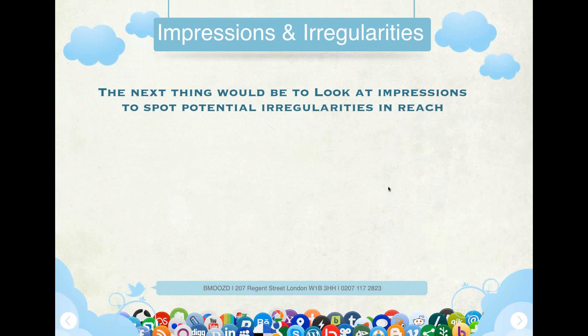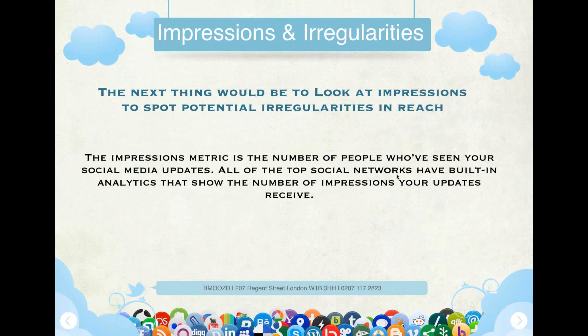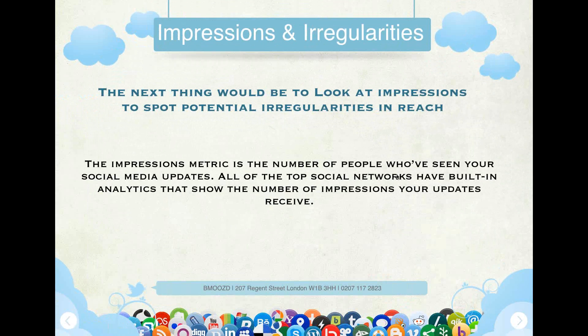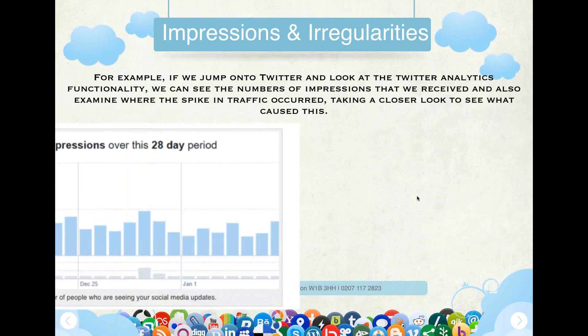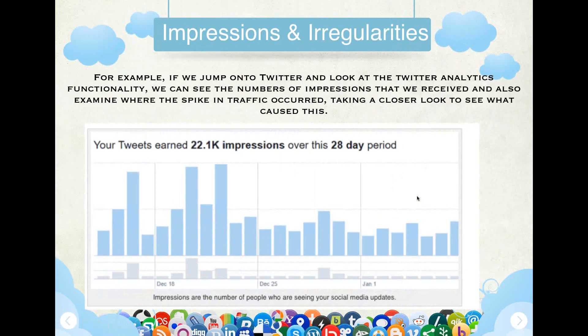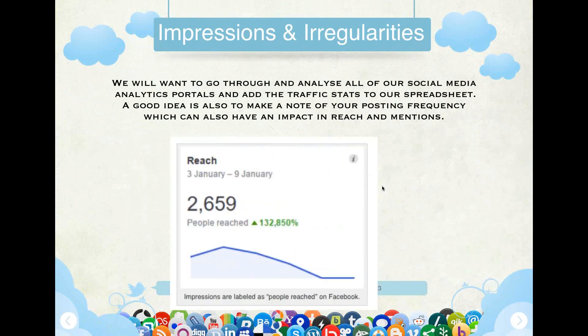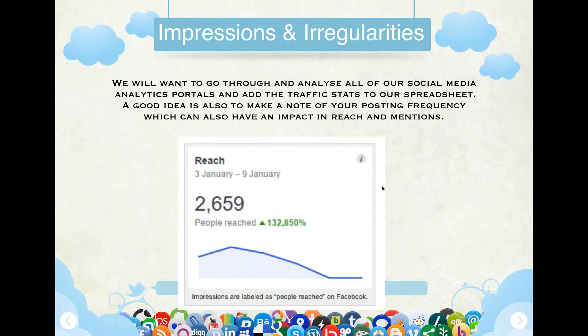Next, we want to look at impressions to spot potential irregularities in reach. The impressions metric is the number of people who have seen your social media updates, and all top social networks have built-in analytics showing the number of impressions your updates received. For example, if we jump onto Twitter and look at the Twitter analytics functionality, you can see the number of impressions received and examine where spikes in traffic occurred to see what caused them. We also want to add the traffic data to our spreadsheet. A good idea is to also make a note of your posting frequency, which can have a huge impact on your reach and impressions.